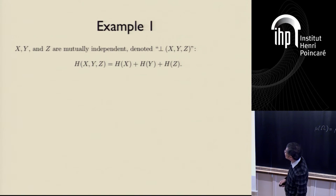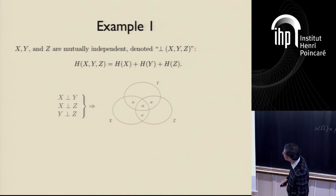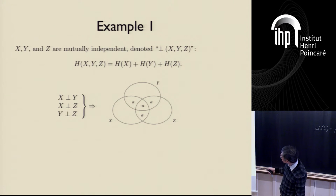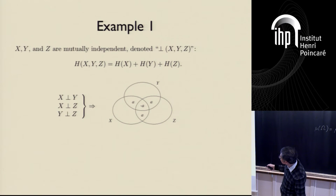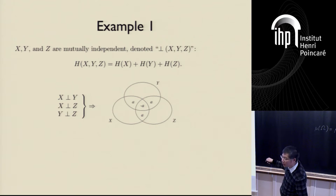Suppose we have three random variables X, Y, Z that are mutually independent. The information-theoretic characterization is that the joint entropy of X, Y, Z equals H(X) plus H(Y) plus H(Z). Since they are mutually independent, they are pairwise independent: X independent of Y, X independent of Z, Y independent of Z. Because X is independent of Y, the mutual information between X and Y must equal zero, which means the value of mu-star on those two atoms must add up to zero. We call this value a, where a is non-negative, so the middle atom must be minus a.